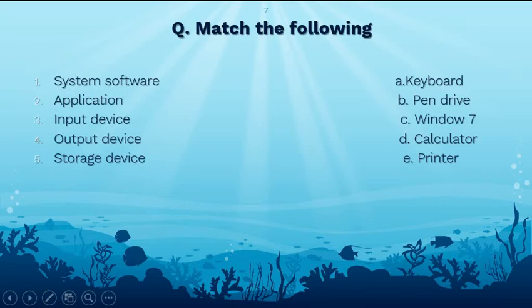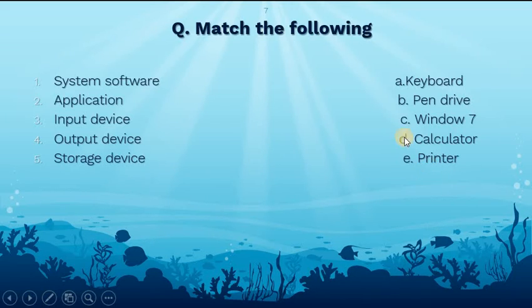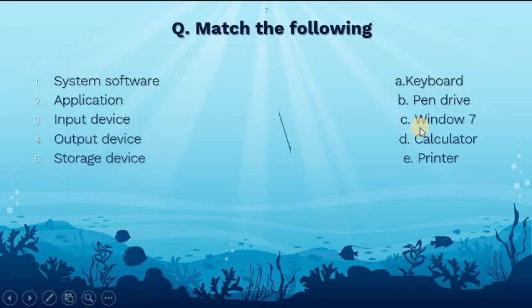Now the match the following question. The first is system software. From the options — keyboard, pen drive, Windows 7, calculator, or printer — the answer is Windows 7, because it is an operating system, which we call system software.